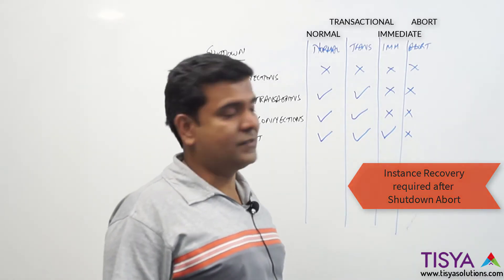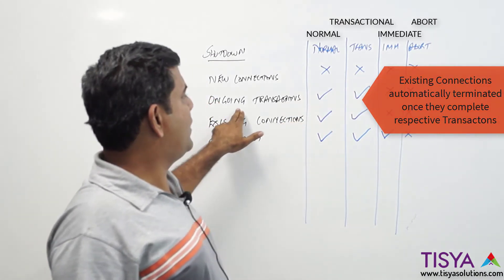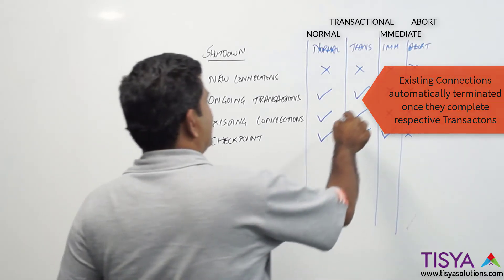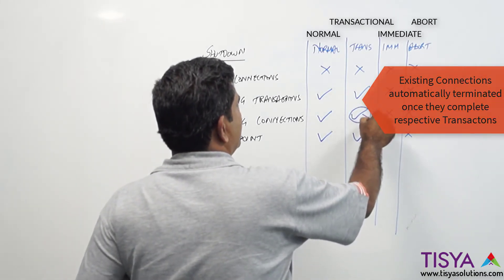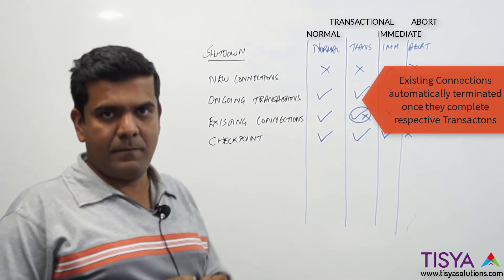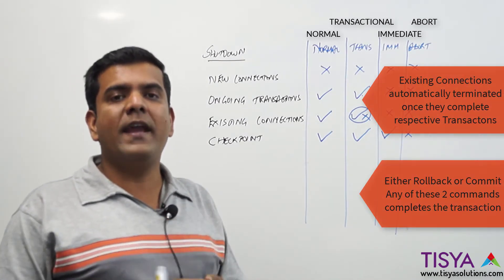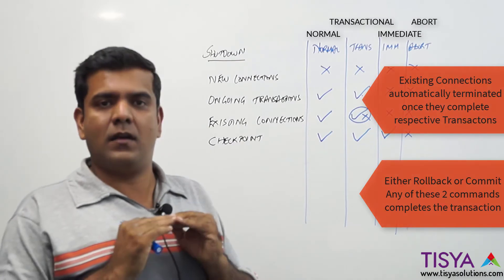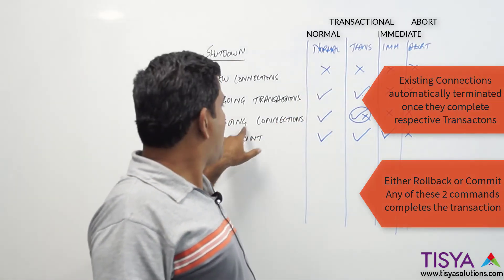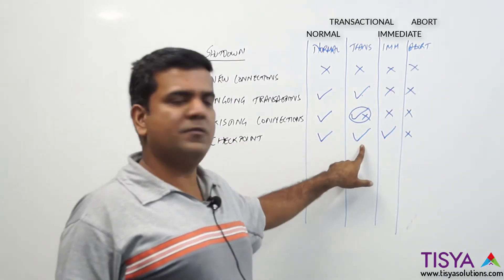If you did a shutdown abort, when you start up again there will be instance recovery that will happen. In the case of a shutdown transactional, ongoing transactions are allowed, but existing connections get terminated whenever the transaction is completed. The database instance does not wait for users to exit their sessions — whenever the transaction completes, connections are automatically terminated and a checkpoint is performed.